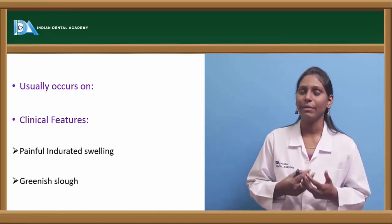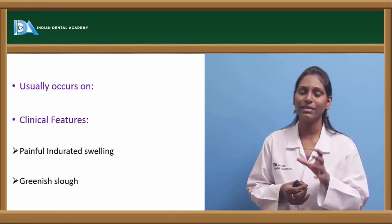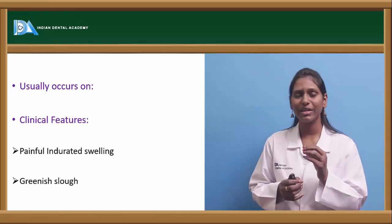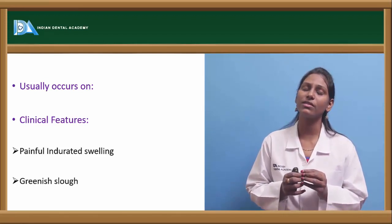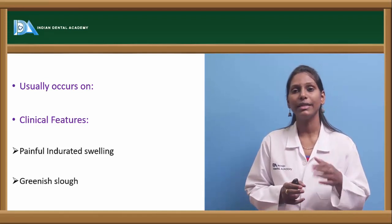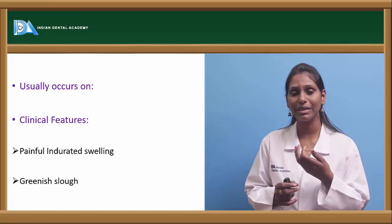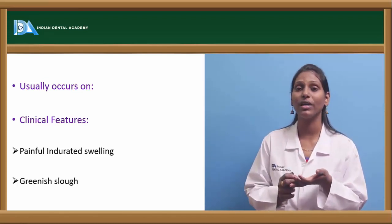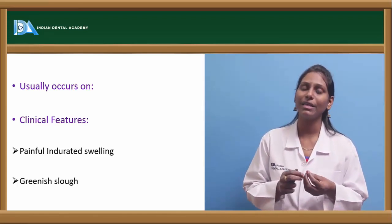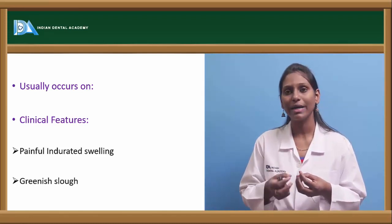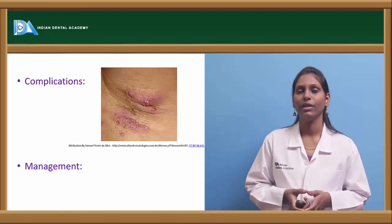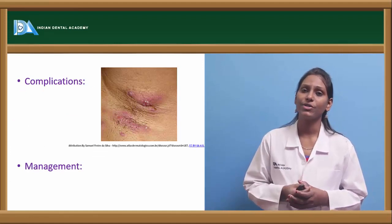Clinically, boils start with an erythematous or tender area with a mildly painful indurated swelling. They are very tender with an indurated surface which later develops central necrosis and surrounding suppuration. Inside these boils we can see a greenish slough — necrotic material consisting of dying cells and Staphylococcus species present within them.